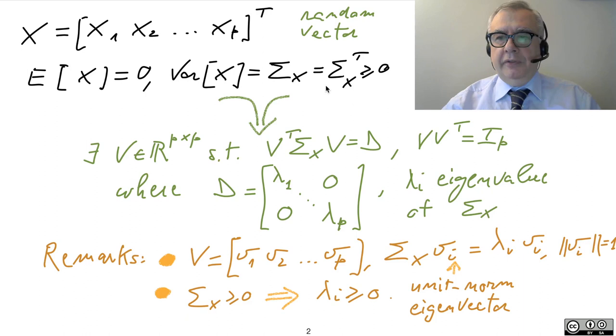And now you know that if you have a symmetric matrix, you can always diagonalize it. And this can be done by means of a transformation matrix V such that V transpose sigma X V is equal to D where D is diagonal. And you can do this with a transformation matrix V which is orthogonal, meaning that VV transpose is equal to the identity.